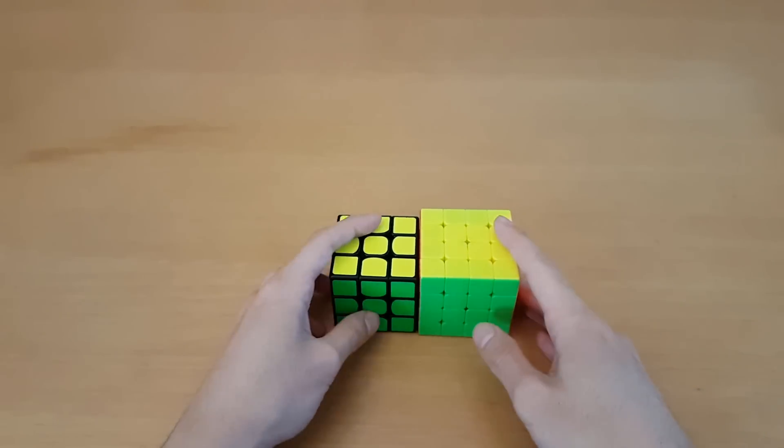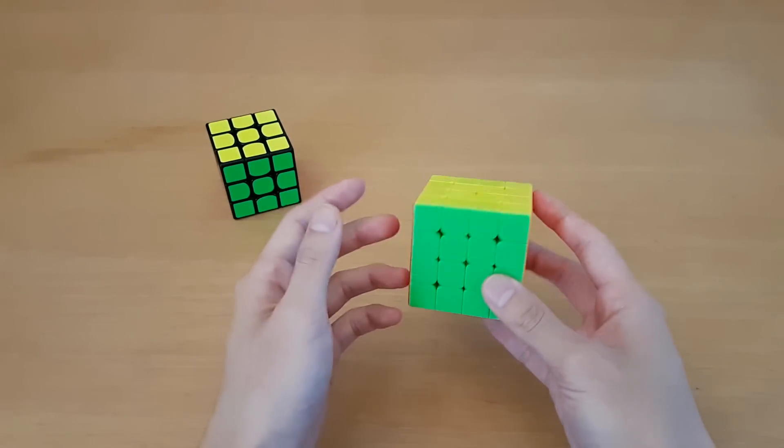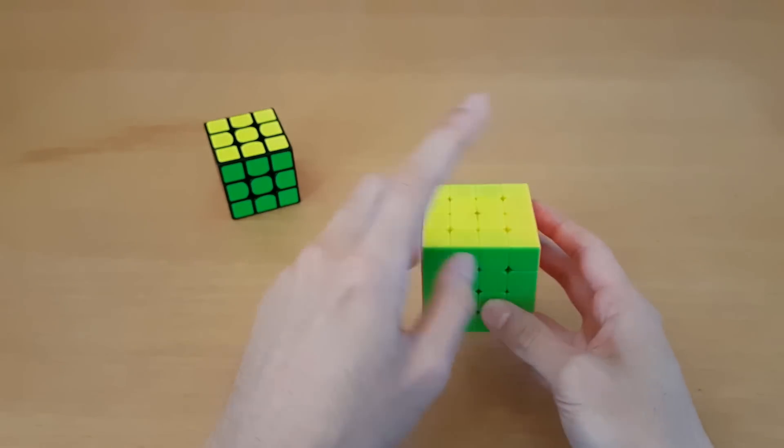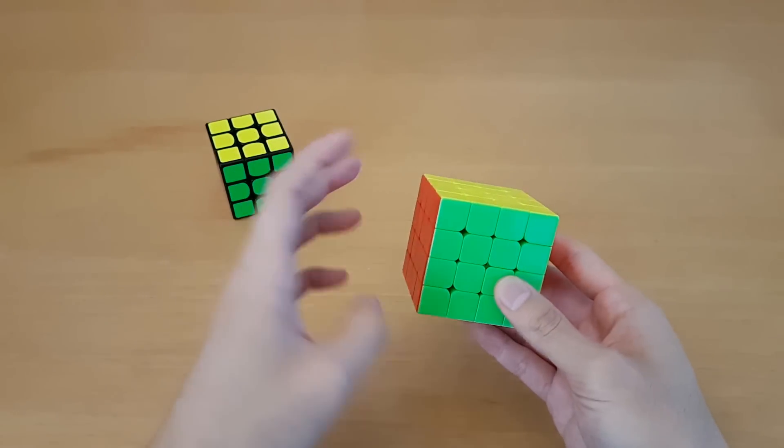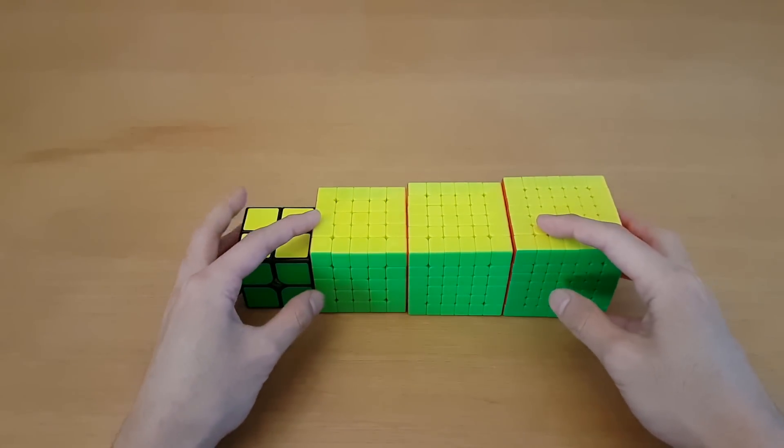Now for 3x3 and 4x4 obviously if you're not color neutral on 3x3 you're not color neutral, but then for 4x4 since you should be using the Yao method it is the best method that makes the cross part way through the solve so it doesn't make sense to start on any centers. You need to start on white or yellow centers in order to do that. But for these cubes you have to be able to start the solve on any side.